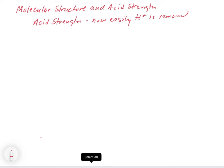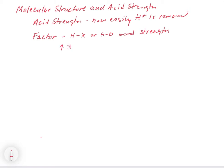Acid strength is defined as how easily the H⁺ is removed. The main factor is bond strength. In all of the different trends we're going to analyze, we're going to look at what factors affect bond strength. As you increase the bond strength between the acidic proton and whatever it's connected to in the acid, you're going to lower the acid strength. The harder it is for the proton to come off, the harder it is for it to act as an acid. So the weaker the bond, the stronger the acid.